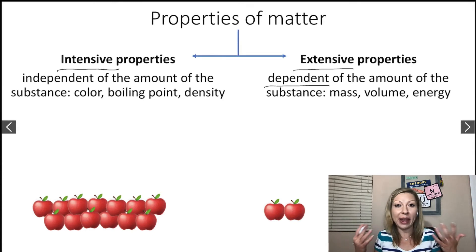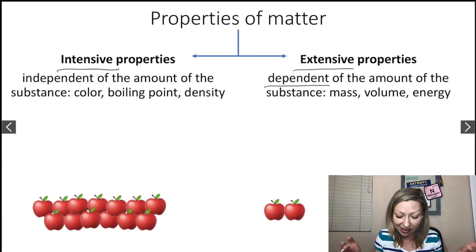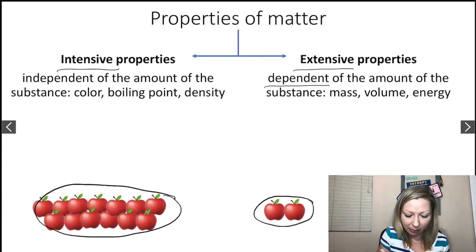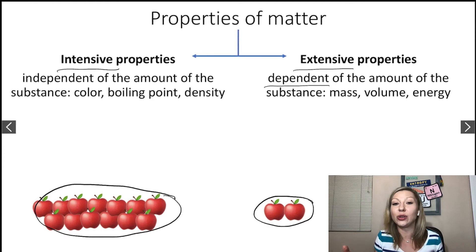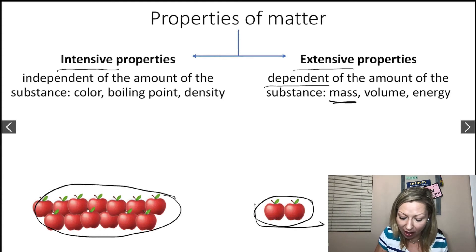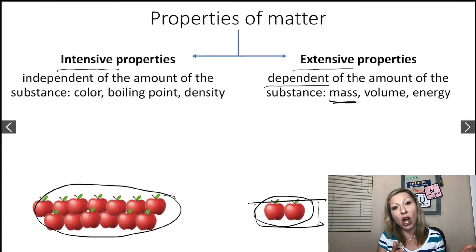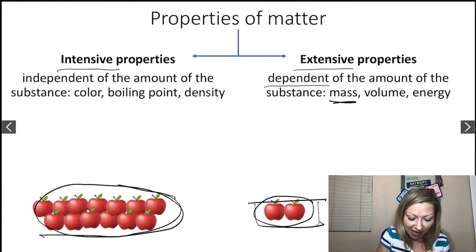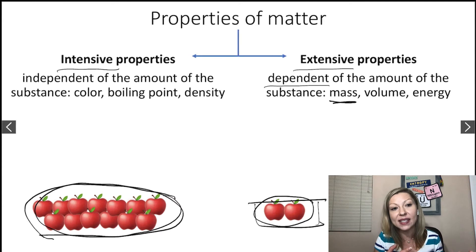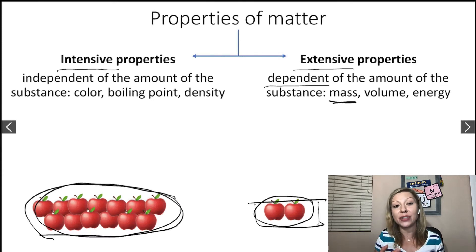You can tell something about their smell or their color. It doesn't matter if we have two apples or way more — the color is going to be red. However, the mass if you only have two apples is going to be significantly smaller compared to when you have a bunch of apples. So mass is an extensive property, and color is an intensive property, which is independent of the amount of substance.